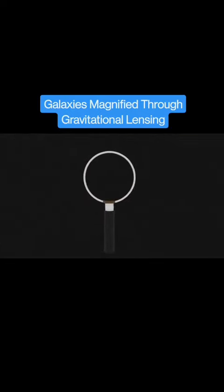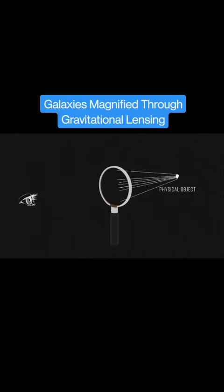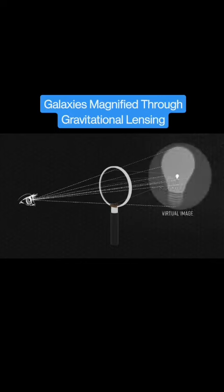In a sense, warped space acts like a magnifying glass. A magnifying glass collects and bends light, making a light bulb, for example, appear bigger and brighter.